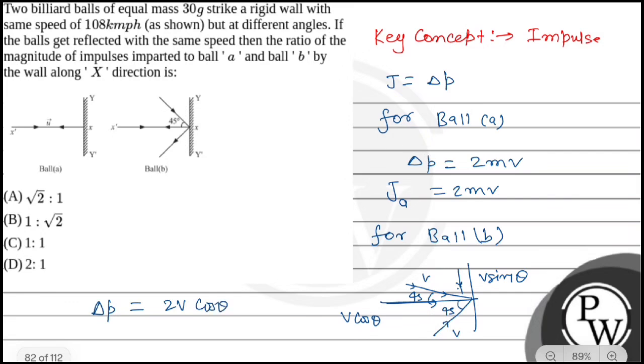So impulse due to ball B, in case of B, will be 2mv cos theta.